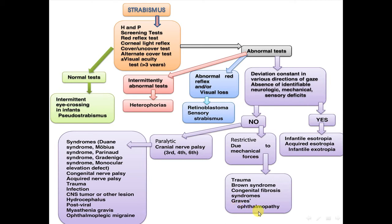Other causes include Graves' ophthalmopathy. Or the cause may be paralytic cranial nerve palsy — third, fourth, or sixth cranial nerve. Associated syndromes include Down syndrome, Möbius syndrome, Parinaud syndrome, Gradenigo syndrome, or monocular elevation defect.